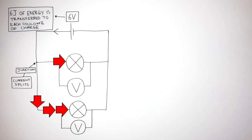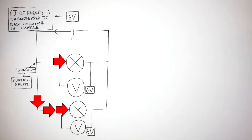So how does this affect the potential difference now the current is smaller? Well the potential difference at the top voltmeter is six volts, the same as the cell, and the potential difference at the bottom voltmeter is also six volts, the same as the cell. So we can see in a parallel circuit, no matter what the current is, the potential difference across any branch always adds up to the same potential difference provided by the cell or battery.